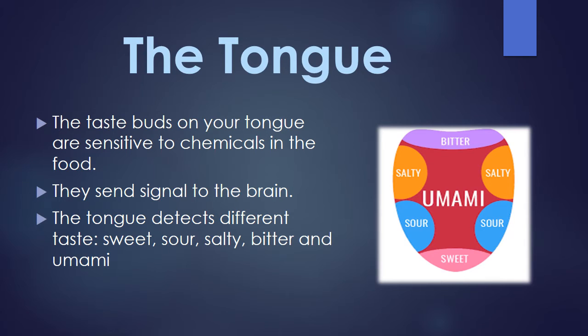So you have an idea of sweet, sour, salty, and bitter taste. Umami is the taste of some meat and soup, because meat and soup have a different sort of taste. So these are the 5 tastes that your tongue can detect. This is all about your tongue.